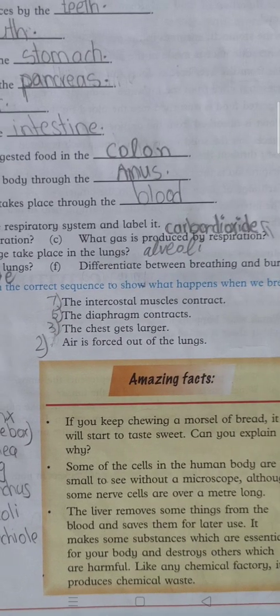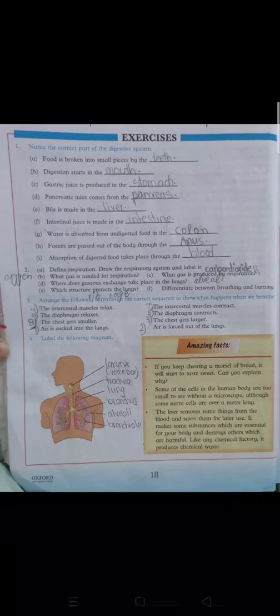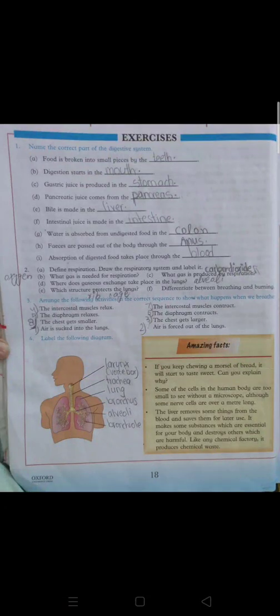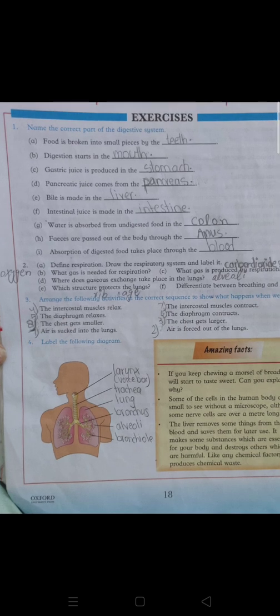Next question is: where does gaseous exchange take place in the lungs? Alveoli - gaseous exchange takes place in the lungs in the alveoli, those balloon-like sacs which I made you see in my previous lecture. Which structure protects the lungs? The rib cage protects the lungs - your 12 pairs of bones protect your soft lungs.